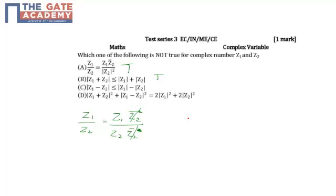Now coming to option C, we will take a simple example. Let us take Z1 equals plus 1 and Z2 equals minus 1. So what we get in the RHS is Z1 minus Z2 would give you 1 plus 1, this mod will give you 2.